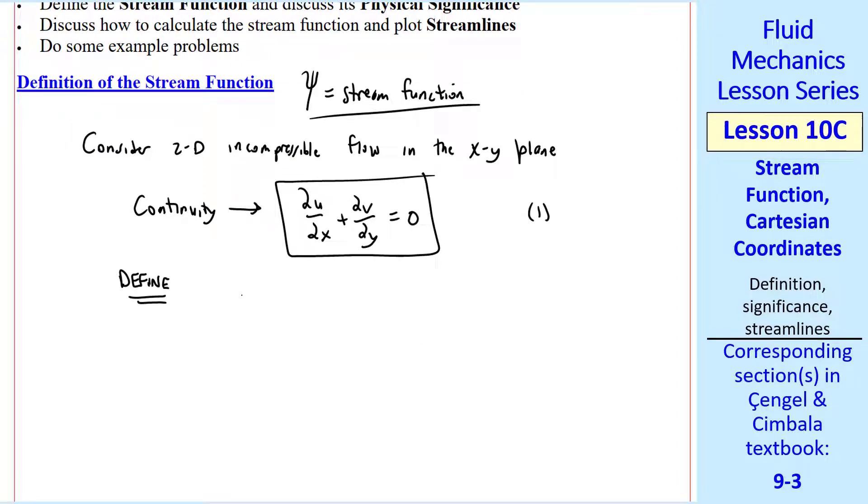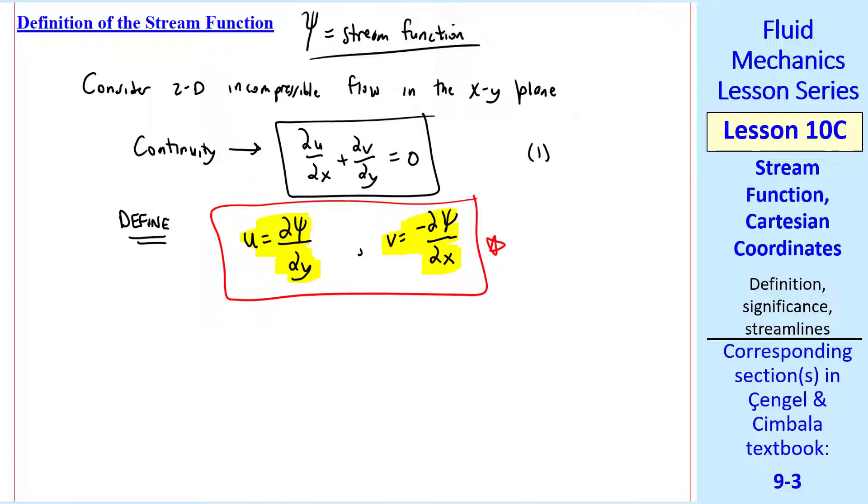We define the stream function as u equal del psi del y and v equal negative del psi del x in Cartesian coordinates. So the partial derivative of psi with respect to y is the u component of velocity, and the negative of the partial derivative of psi with respect to x is the v component of velocity. Why do we define it this way?